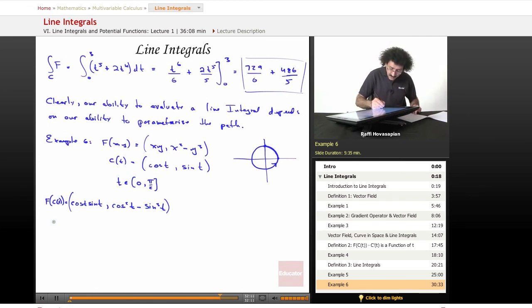Now let's do c prime of t, or I'm going to write it as dc dt. So when I take the derivative of cosine t, I get minus sine t. I take the derivative of sine, which is cosine t.